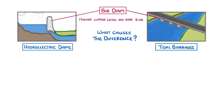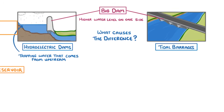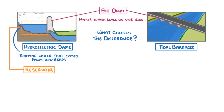In a normal hydroelectric dam, we're just trapping the water that's come from upstream and preventing it from continuing its journey towards the ocean. If we do this for long enough, we end up accumulating a huge amount of water, which we call a reservoir, which basically looks like a big lake.